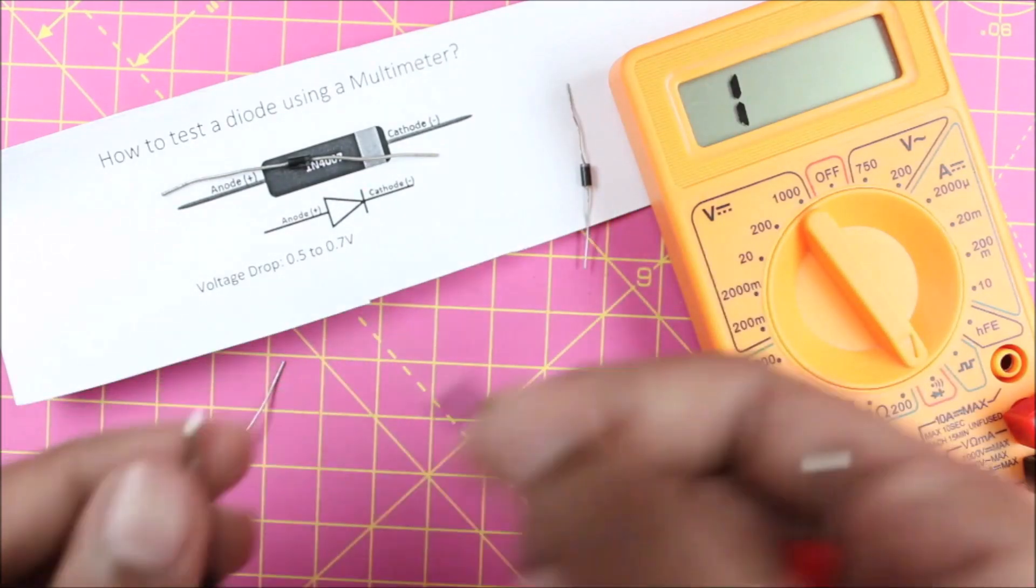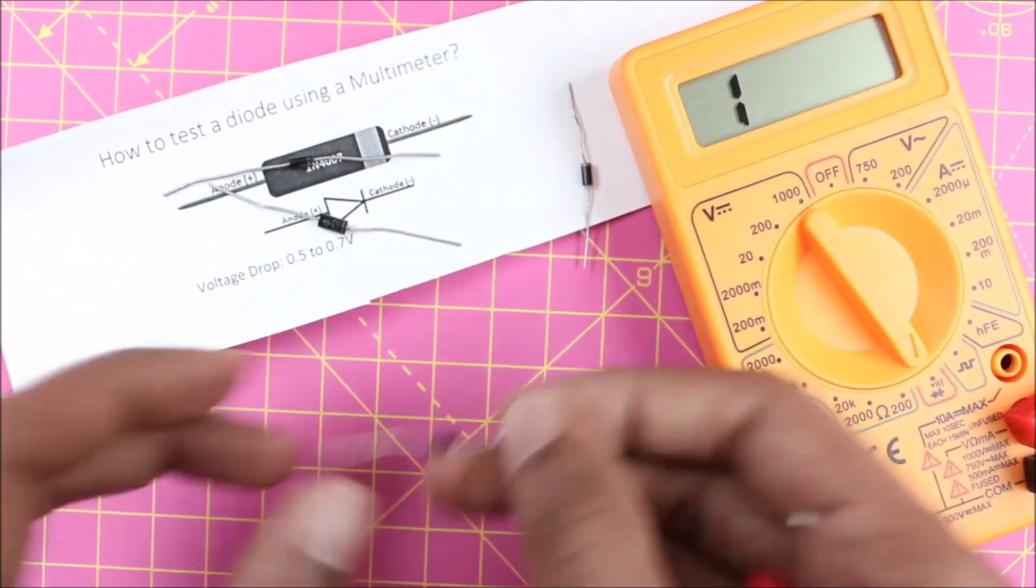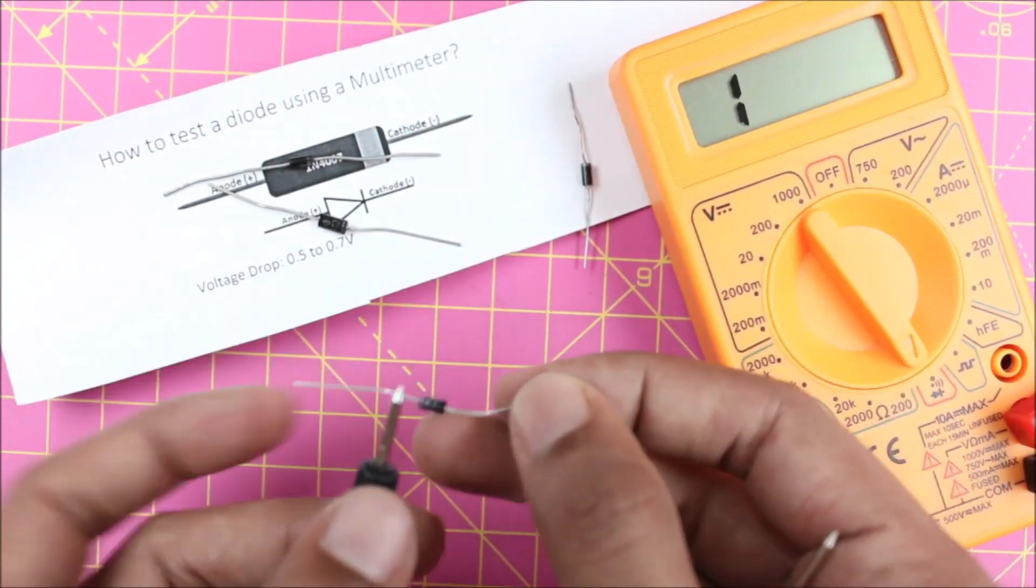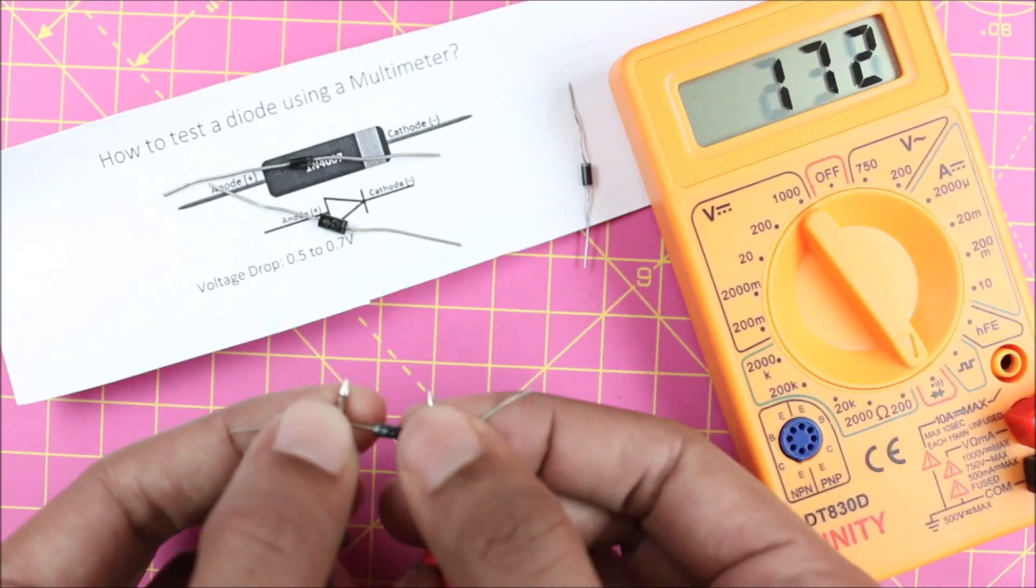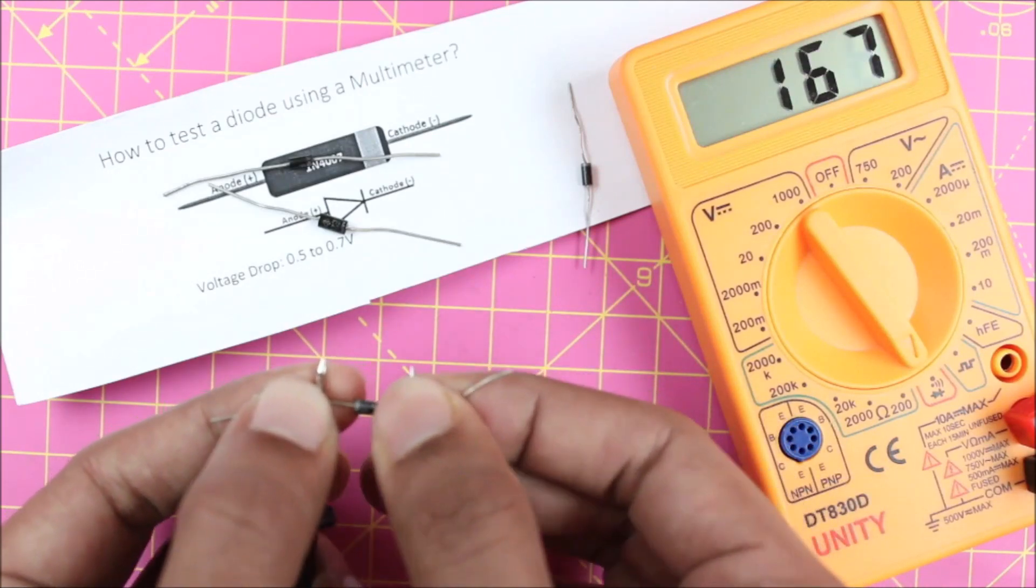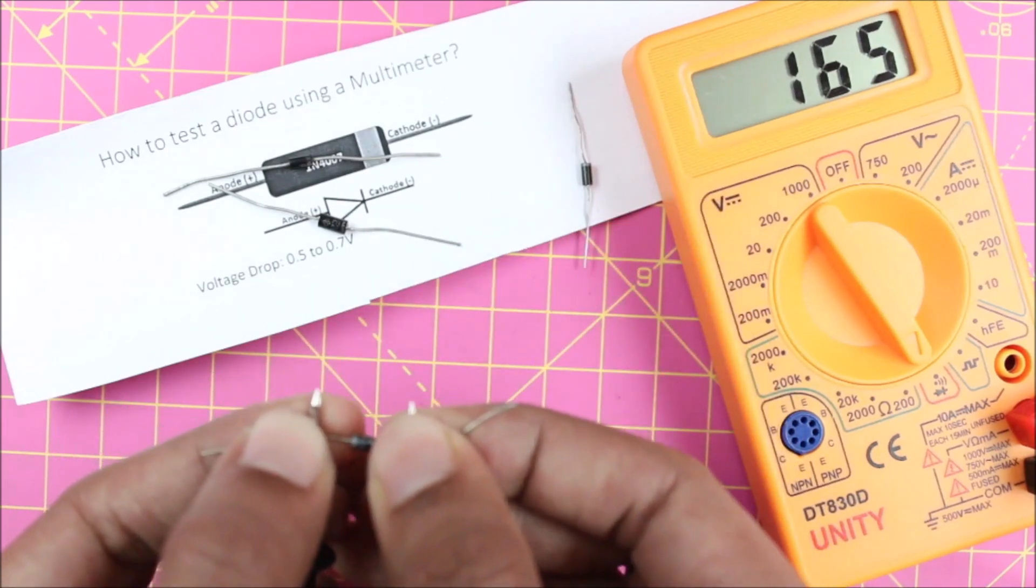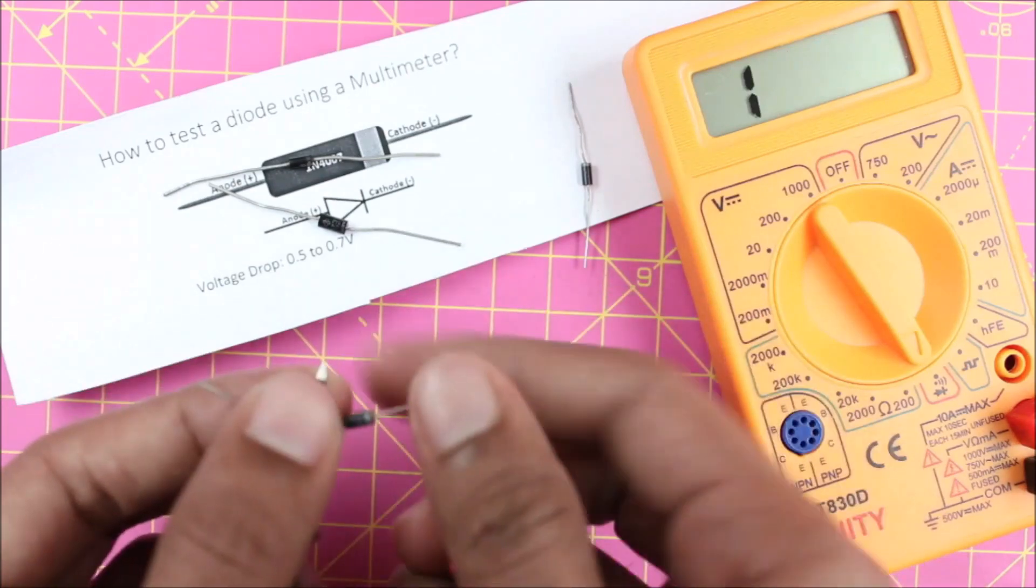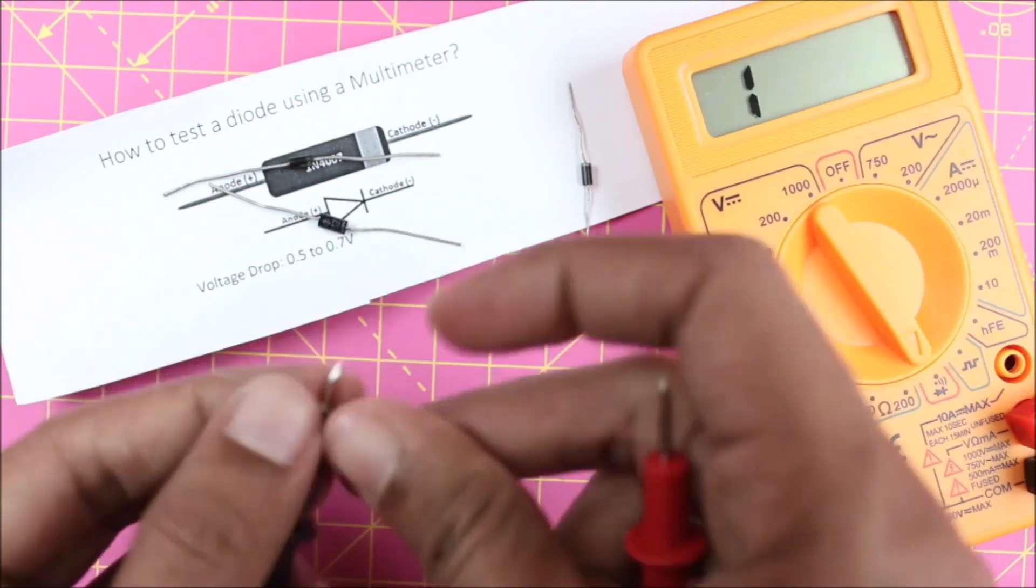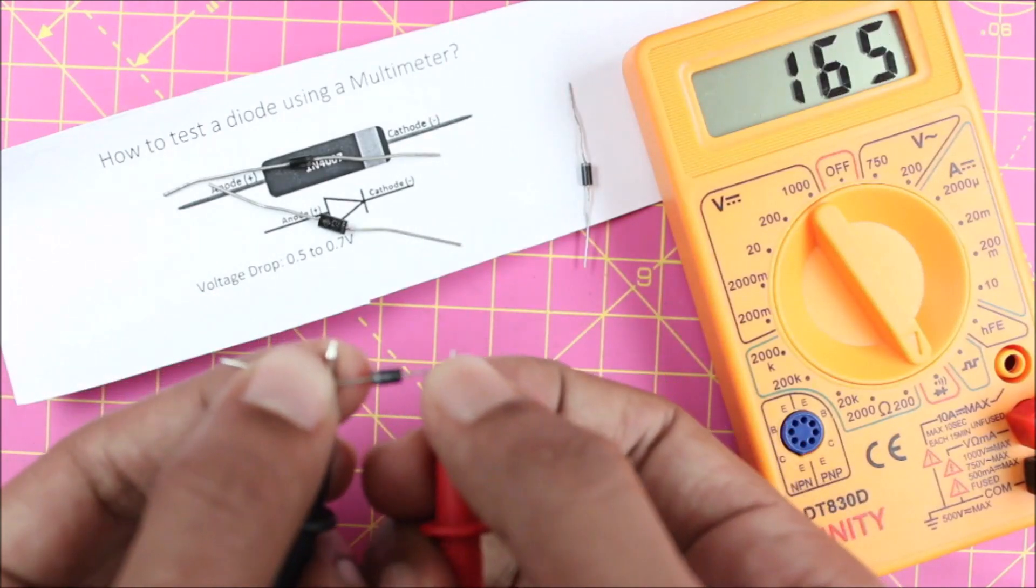Now if the diode is not working, when you measure the forward voltage—that is, black probe on the cathode and red probe on the anode—you will notice a weird value which is less than 0.5 volts. That means the diode is probably damaged and it is better to use a new one. In the reverse bias condition when you swap it, you might still get one, but still in the forward bias condition since the voltage is low, it means the diode is damaged.